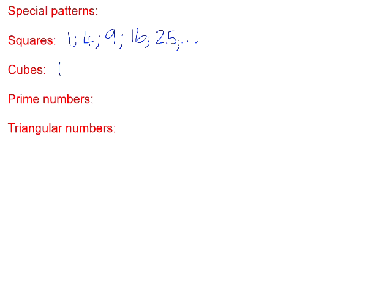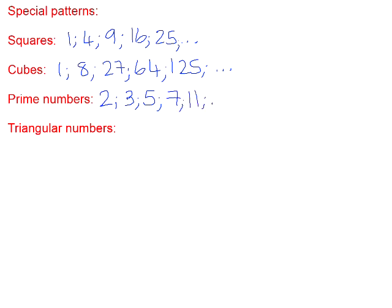The pattern of cube numbers: 1 cubed is 1, 2 cubed is 8, 3 cubed is 27, 4 cubed is 64, 5 cubed is 125, and we could carry on. The pattern of prime numbers — numbers only divisible by 1 and themselves. However, 1 is not a prime number; it's a special case. The first prime is 2, then 3. 4 is not prime (divisible by 2). 5 is prime. 6 is not prime (divisible by 2 and 3). 7 is prime, then 11, and we could carry on generating the list.